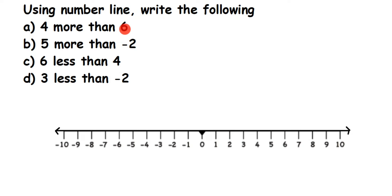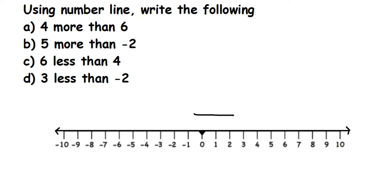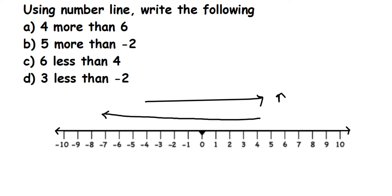Before solving, let me explain the number line. You can see we have zero at the center. Towards the right side we have all the positive integers. When you start from zero and go towards the right side, the numbers increase — after zero we get one, two, three, and so on. From anywhere on the number line, going right will always increase the value.